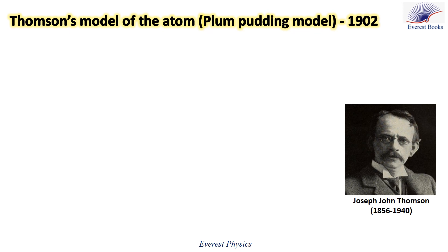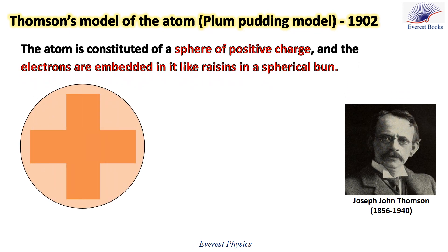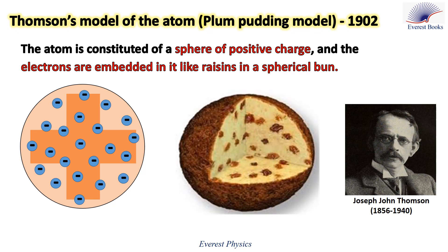In 1902, Sir Joseph John Thomson proposed the plum pudding model of the atom. According to Thomson's model, the atom is constituted of a sphere of positive charge and the electrons are embedded in it like raisins in a spherical bun.